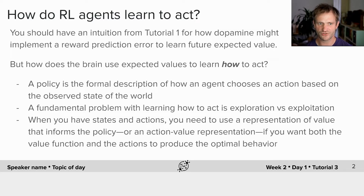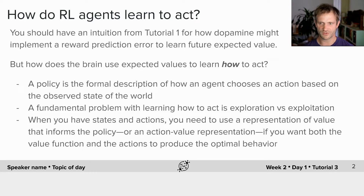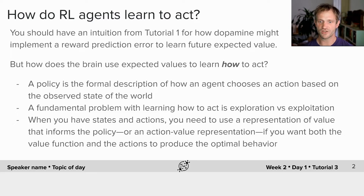From Doina's lecture this morning: a policy is the formal description of how an agent chooses an action based on the observed state of the world. A fundamental problem with learning how to act is exploration versus exploitation. When you have states and actions, you need to use a representation of value that can inform your policy, or an action value representation, if you want the value function and the actions to produce optimal behavior.